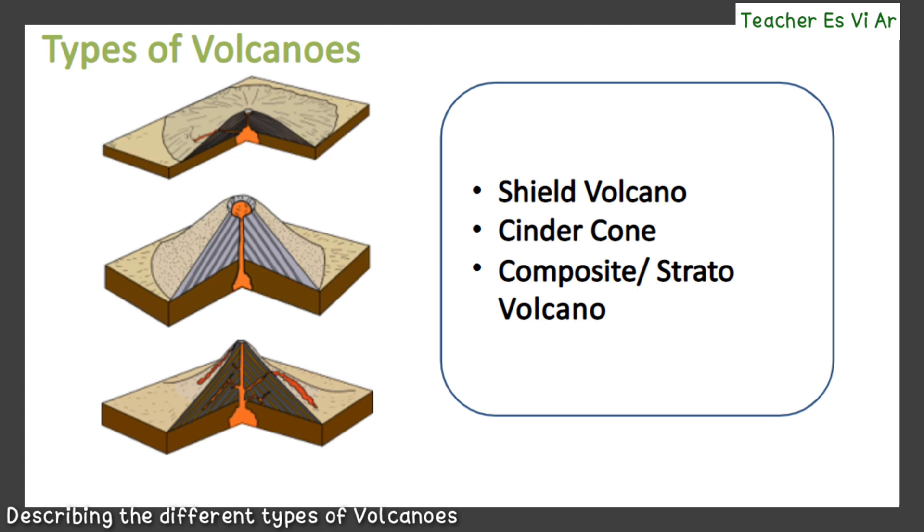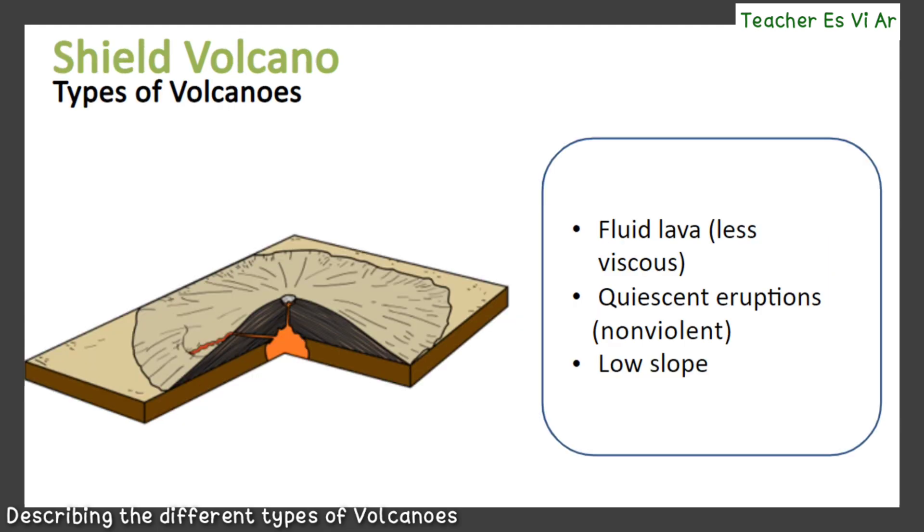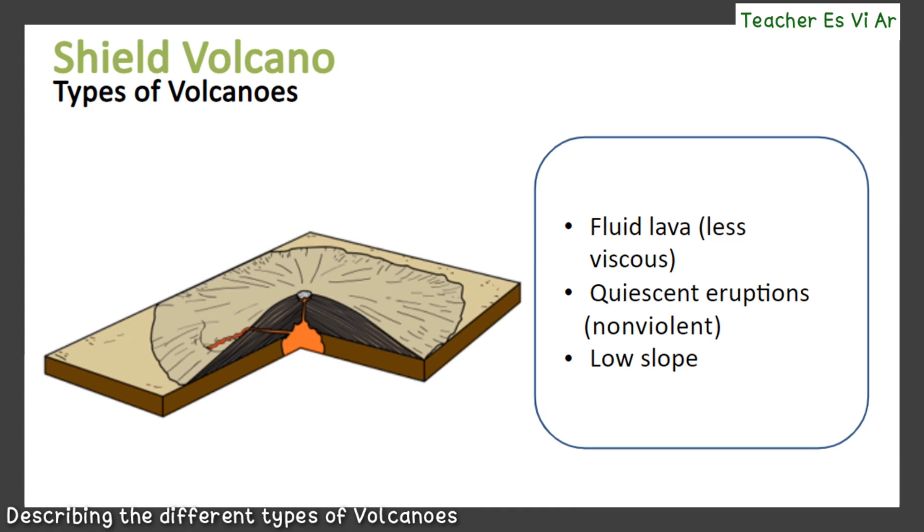Let us take a look at the first type, the shield volcano. Shield volcanoes are formed from fast-flowing lava that flows easily over the surface. The lava in shield volcanoes is fairly fluid or relatively less viscous than other types of volcanoes. Since the lava is fluid, eruptions from this type of volcano are relatively non-violent.